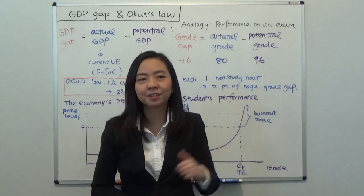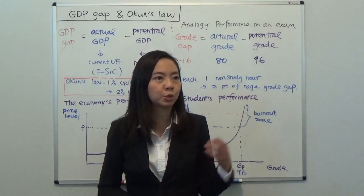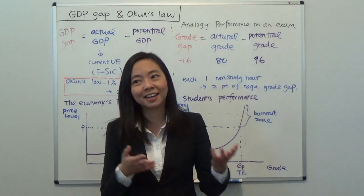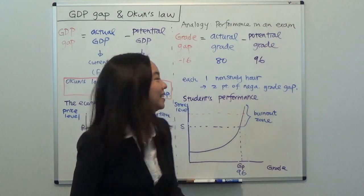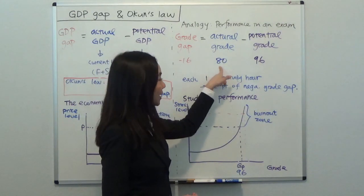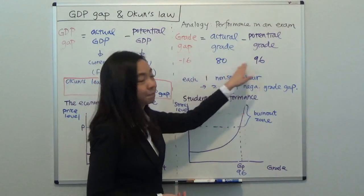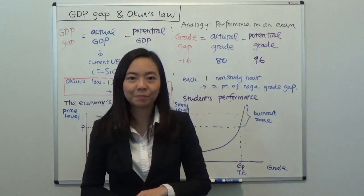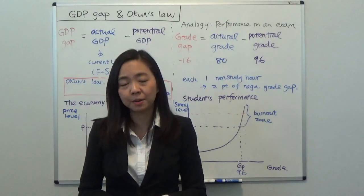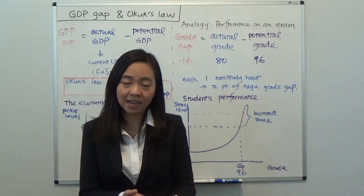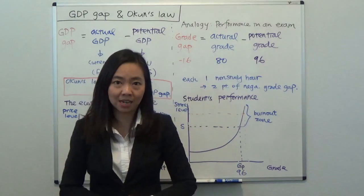In contrast, suppose you did not use all the time available to study. Suppose before a test you went to a movie or went to a party with friends and got drunk, and then you had a hangover when you took the test. Then very likely your grade will be lower than your potential — we call that the actual grade. So your actual grade is 80 and your potential grade is 96, giving a grade gap of 80 minus 96, which is negative 16. This negative 16 reflects the fact that you did not use all the time available to study — time is a resource, and not using it means you are wasting that resource.